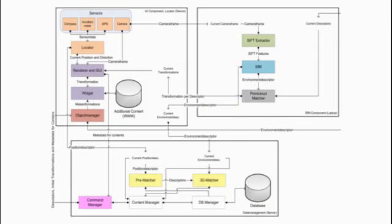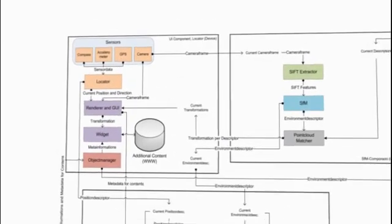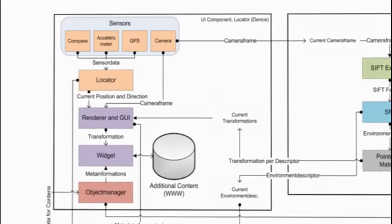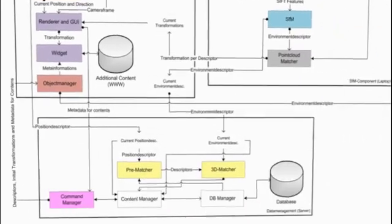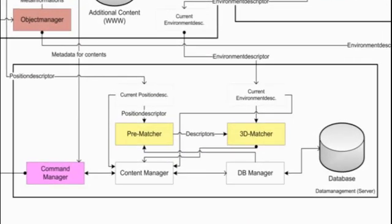Technically, Videmos consists of three components. The smartphone component establishes the user interface and allows insertion, view, and manipulation of contents. The server stores all the contents and delivers them to all connected smartphones depending on their location.